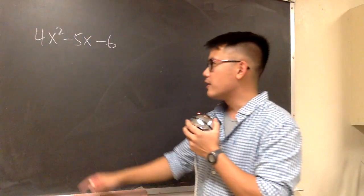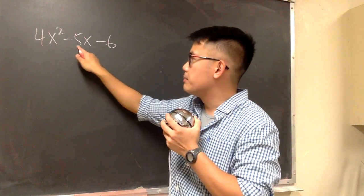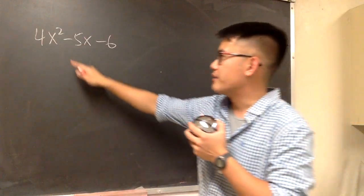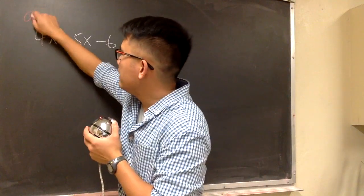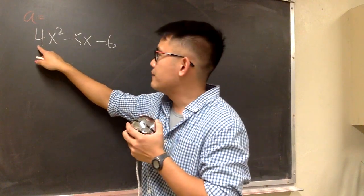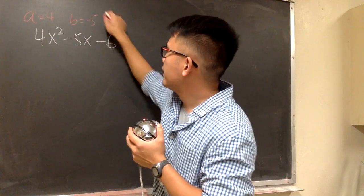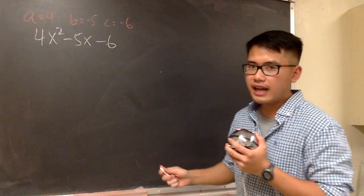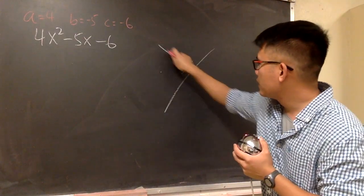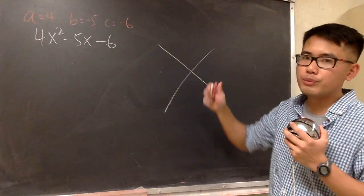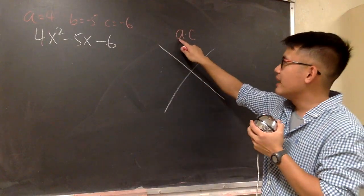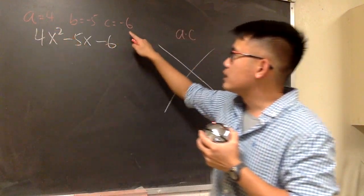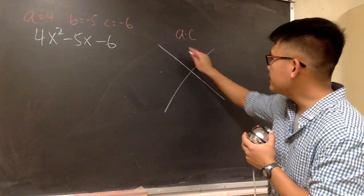This is called the AC method plus grouping. First, we have to make sure the expression is in the form of ax squared plus bx plus c. We have ax squared, bx, and the term with no x. Now let's identify the a, b, c values. The a is the coefficient of x squared, which is 4. The b is negative 5, and c is negative 6. On the side, let's draw a big X. On top, we put down a times c — this is why it's called the AC method. We multiply a and c together: 4 times negative 6 gives us negative 24.